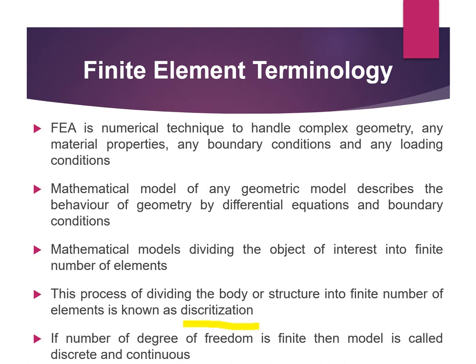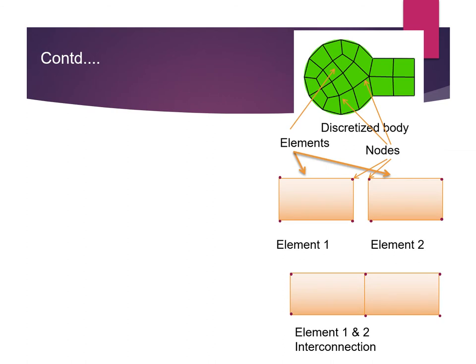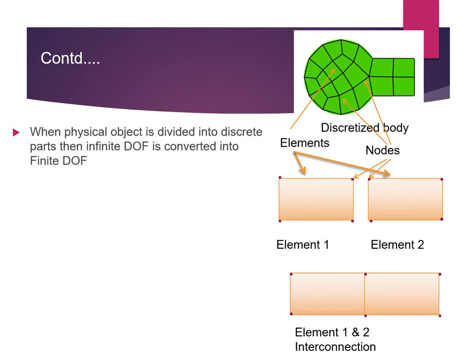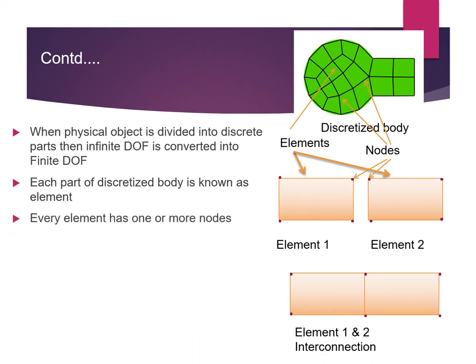If the number of degrees of freedom is finite, the model is called a discrete model. When a physical object is divided into discrete parts, infinite degrees of freedom are converted into finite degrees of freedom. Each part of the discretized body is known as an element, and every element has one or more nodes. In a picture, you can see that one body is divided into a number of elements and those elements are connected with nodes. Elements are connected to each other at these nodes.